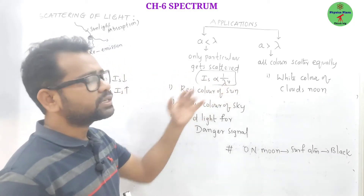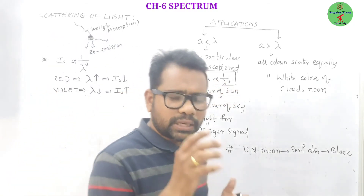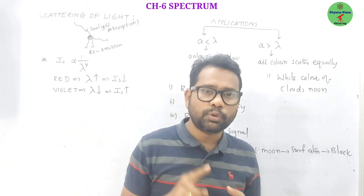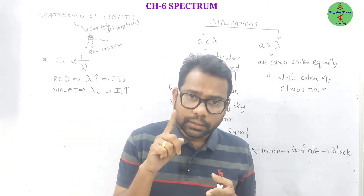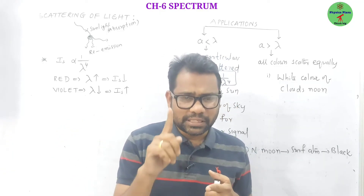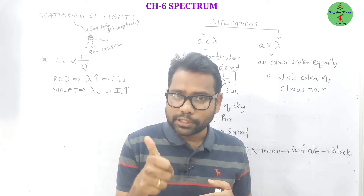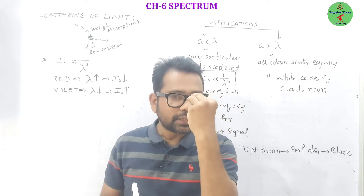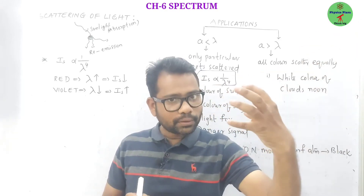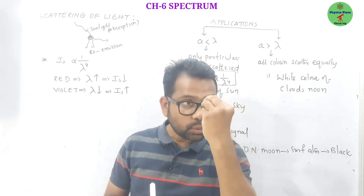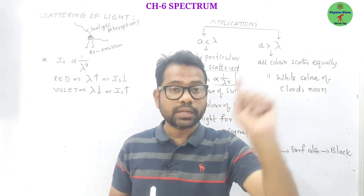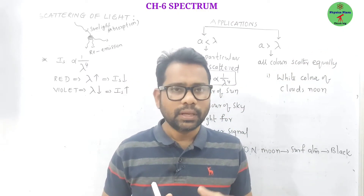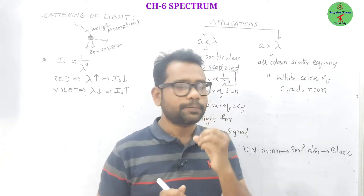Application 1: Red color of the sun during sunset and sunrise. During sunrise and sunset, light has to travel a long distance. All colors get scattered except red, because red color has the maximum wavelength. So red color reaches our eye without getting scattered, and that is why the sun appears red during sunrise and sunset — because red light scatters the least.